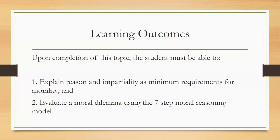Let us start with the learning outcomes. Upon completion of this topic, the student must be able to: number one, explain reason and impartiality as minimum requirements for morality; and number two, evaluate a moral dilemma using the seven-step moral reasoning model, which will be discussed later on, along with a situation we will analyze to determine the proper decision.